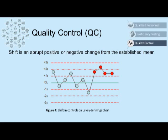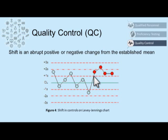When we plot these control values on a Levy-Jennings chart, we can see shifts, trends, and random errors. A shift is an abrupt positive or negative change from an established mean. So we're cruising along, with everything falling maybe a little bit outside of one standard deviation, and then all of a sudden on our seventh day of testing, we have an abrupt positive change. It continues to fall outside of one standard deviation positive from this last result — so this would be a shift.